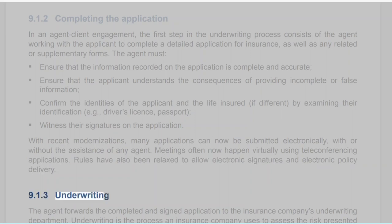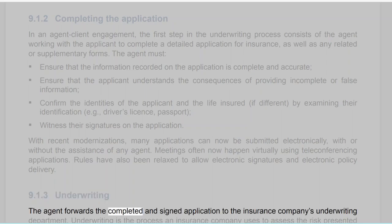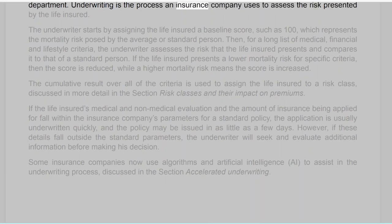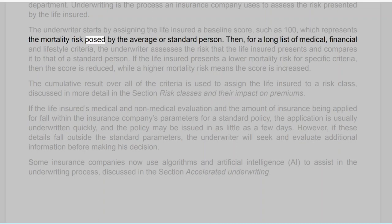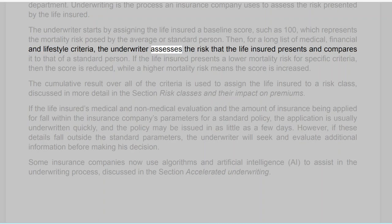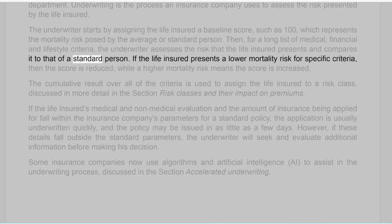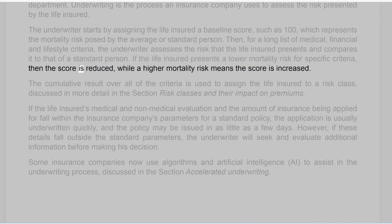Section 9.1.3: Underwriting. The agent forwards the completed and signed application to the insurance company's underwriting department. Underwriting is the process an insurance company uses to assess the risk presented by the life insured. The underwriter starts by assigning the life insured a baseline score, such as 100, which represents the mortality risk posed by the average or standard person. Then, for a long list of medical, financial, and lifestyle criteria, the underwriter assesses the risk the life insured presents and compares it to that of a standard person. If the life insured presents a lower mortality risk for specific criteria, the score is reduced, while a higher mortality risk means the score is increased.